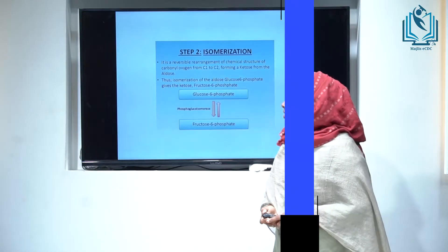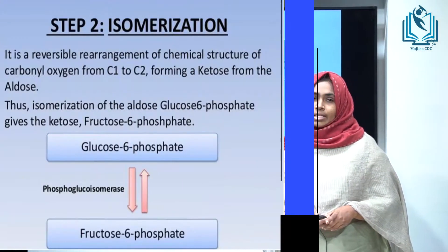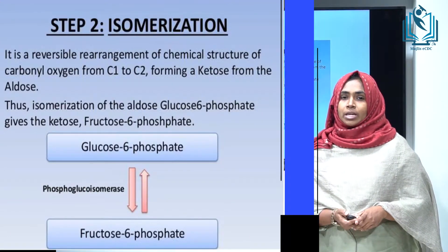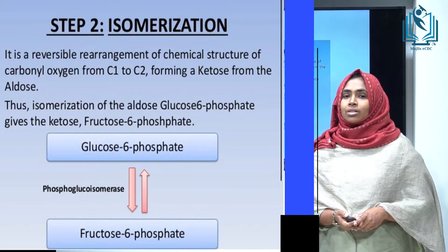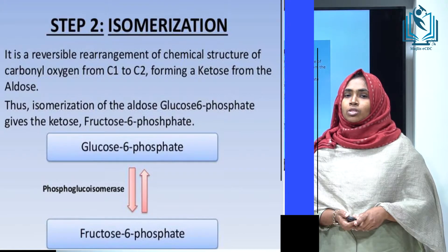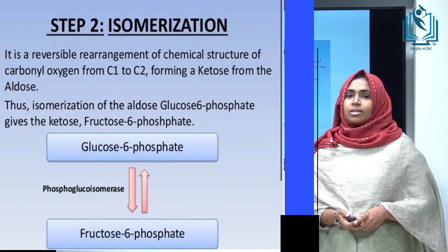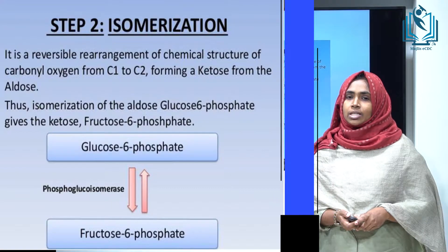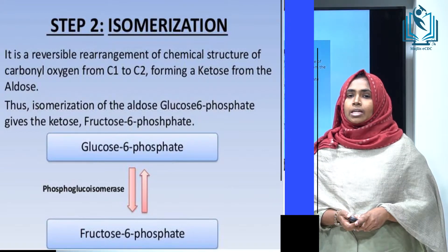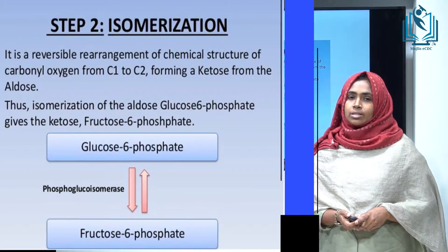The second step of glycolysis is isomerization. Here, glucose-6-phosphate is converted into fructose-6-phosphate by the enzyme phosphoglucoisomerase. Cofactors such as magnesium are required for activation, and this is a reversible process.